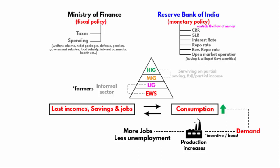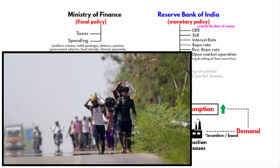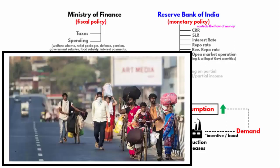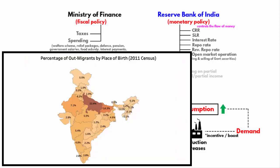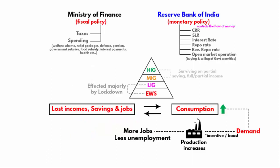From past one month, you must have seen in the news that many migrant workers are walking back to their hometown. These workers belong to Uttar Pradesh, Bihar, Jharkhand, Odisha, Madhya Pradesh, and West Bengal. They all fall under the low income group or economically weakest section — in other words, they are part of the informal sector.